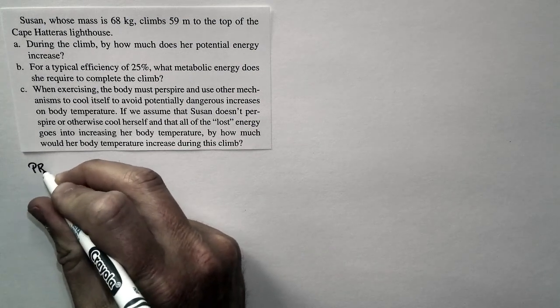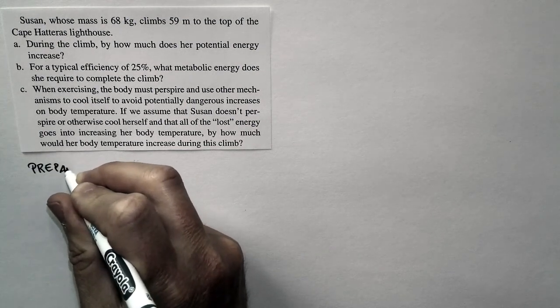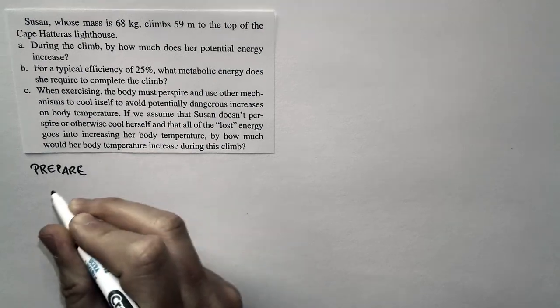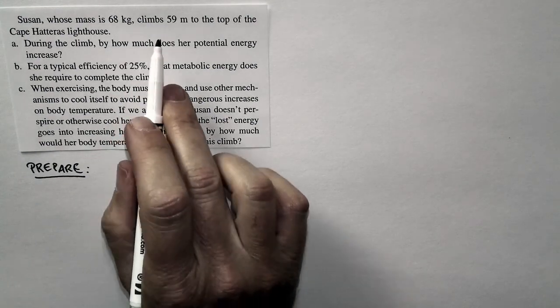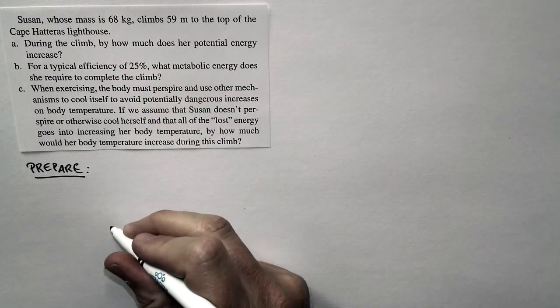Let's take a look at what this problem is asking. Susan, who has a mass of 68 kilograms, as so many people at the end of Chapter 11 do, climbs 59 meters to the top of the Cape Hatteras Lighthouse.